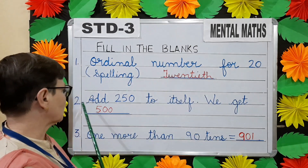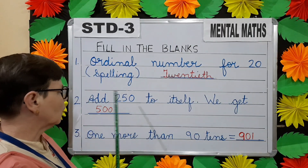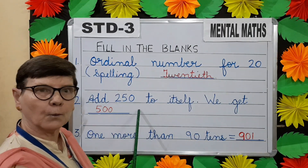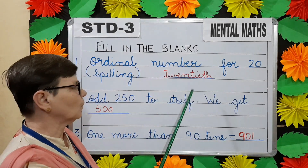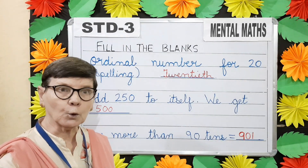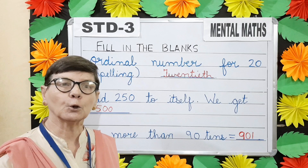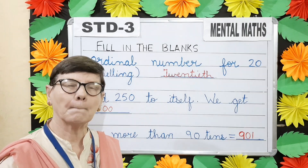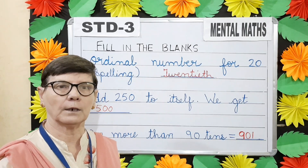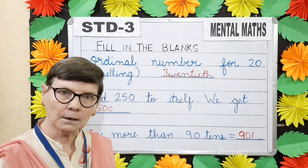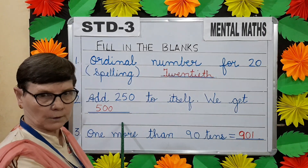Question number two. Add two hundred and fifty to itself. Two itself means two hundred and fifty plus two hundred and fifty will give you five hundred.